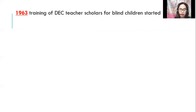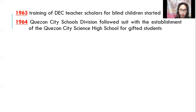In the same year, the Philippine General Hospital opened classes for its school-age chronically ill patients. With the approval of Republic Act No. 3562 in 1963, the training of DECS teacher scholars for blind children started at the Philippine Normal College. The Philippine Printing House for the Blind was established at the DECS compound with the assistance of the American Foundation for Overseas Blind, UNICEF, and CARE Philippines. In the same year, the Manila Science High School for gifted students was established. In 1964, the Quezon City Schools Division followed suit with the establishment of the Quezon City Science High School for gifted students.